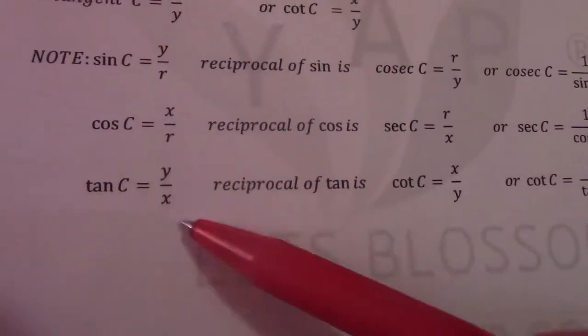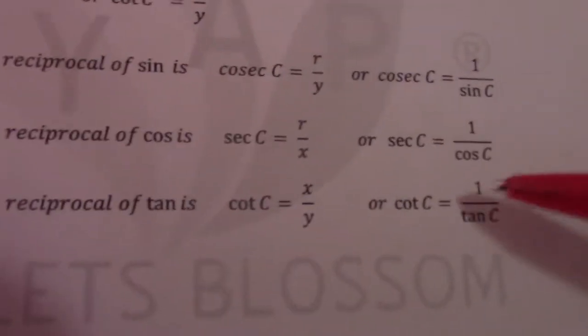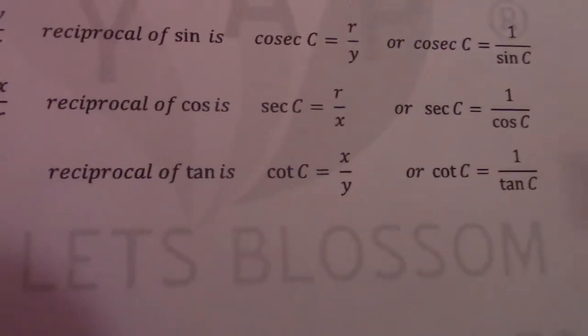The same thing applies with tan c. You see tan c is y over x, cot c is x over y, or we say cot c equals 1 over tan c.